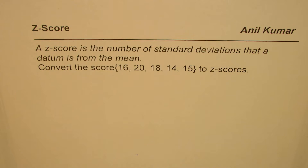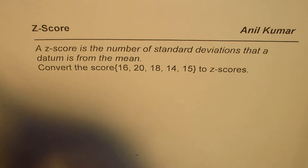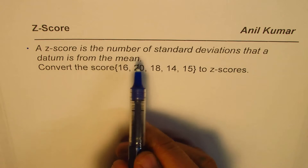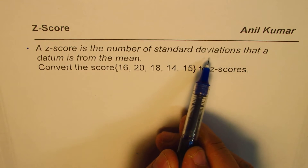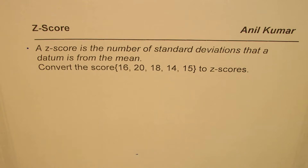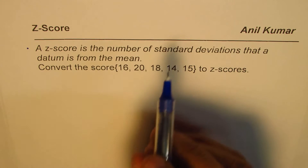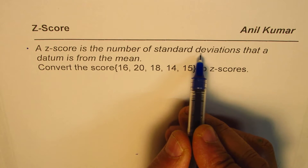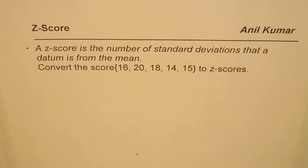I'm Anil Kumar and in this video we'll understand what is a z-score. A z-score is the number of standard deviations that a datum is from the mean. So we're trying to find where the data is as compared to the mean value in terms of standard deviations — how many blocks of standard deviations it is away from the mean.